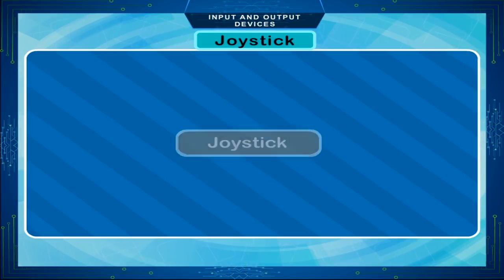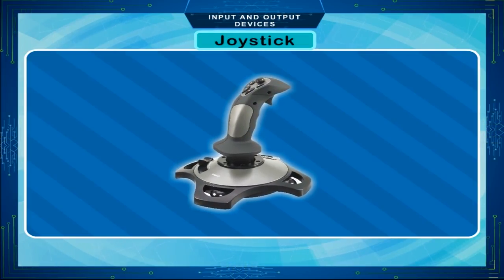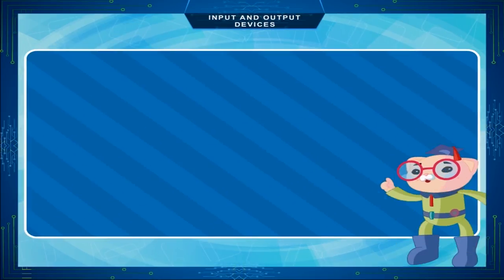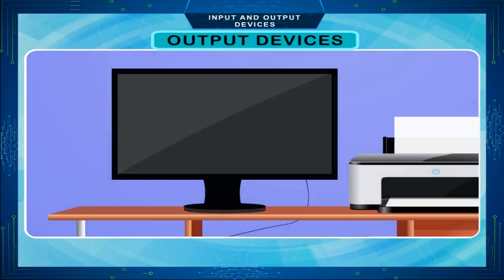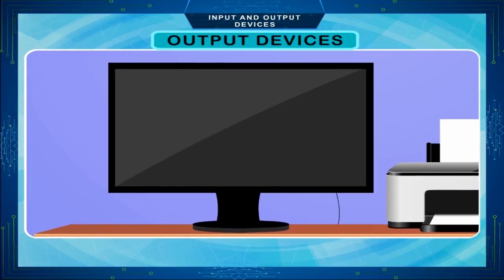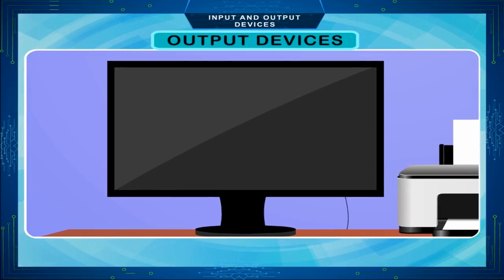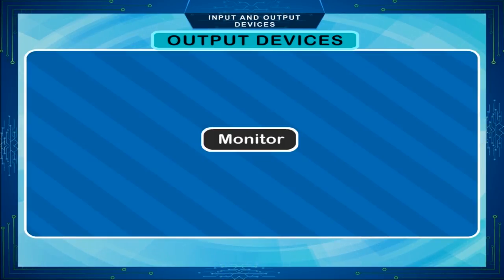Joystick. A joystick is used for playing computer games and video games. Output devices. A device that is used to receive the result or output from the computer and display it is called an output device. Some common output devices are described below.